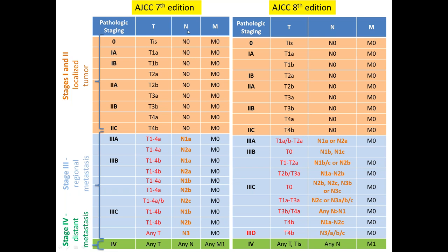For pathology stage 3 comparison between 7th and 8th editions: in the 8th edition, the N category now spans 3A through 3D. Groups are based on multivariable models incorporating both N category elements and T category elements — including tumor thickness and ulceration — unlike the 7th edition where the differentiator was primarily the N category alone. Stage 3D applies only to patients with T4B combined with any N3 (A, B, or C) and without distant metastasis.